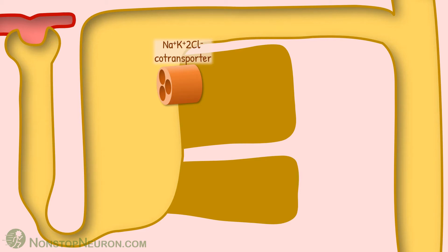The cells have sodium-potassium-2-chloride cotransporter and potassium channels on the apical membrane, and sodium-potassium-ATPase pump and chloride channel on the basolateral membrane.